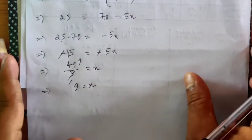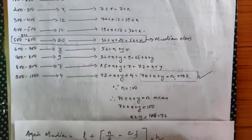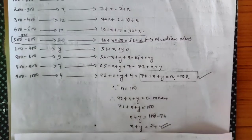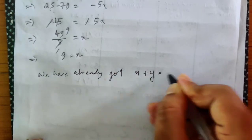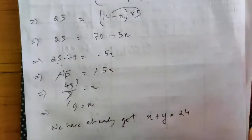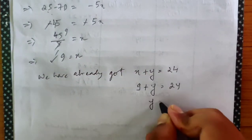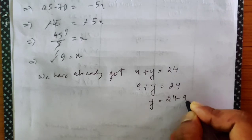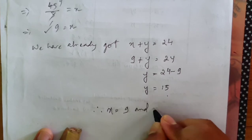The value of x is 9. Now recall we already found x+y = 24. Since x = 9, then y = 24 − 9 = 15. Therefore x = 9 and y = 15.